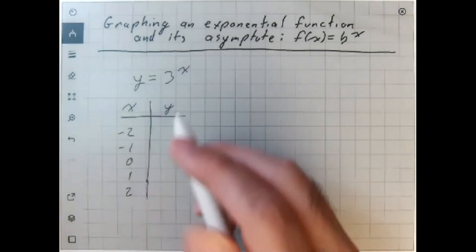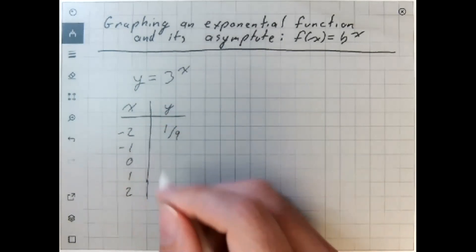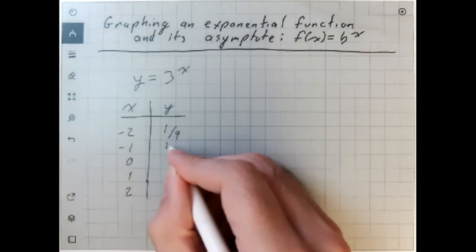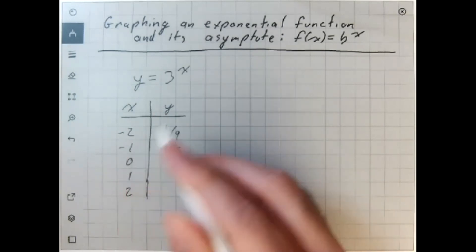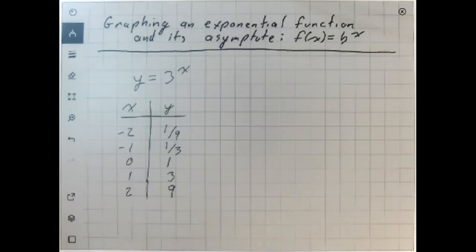3 raised to the negative 2nd power is 1/9th, 3 raised to the negative 1st power is 1/3rd, anything raised to the 0 power is 1, anything raised to the 1st power is that thing, and 3 squared is positive 9.